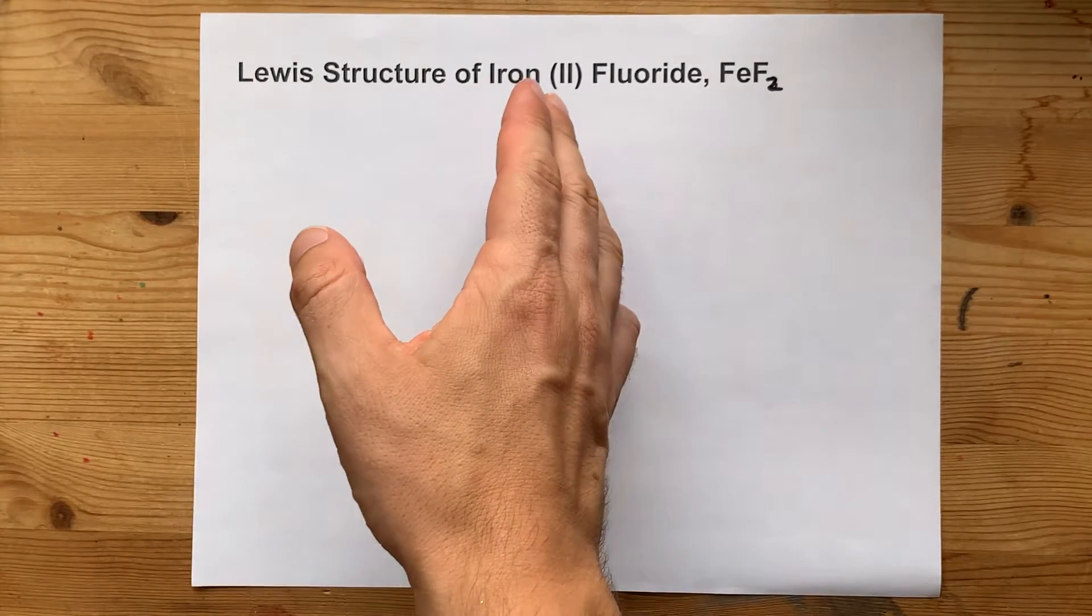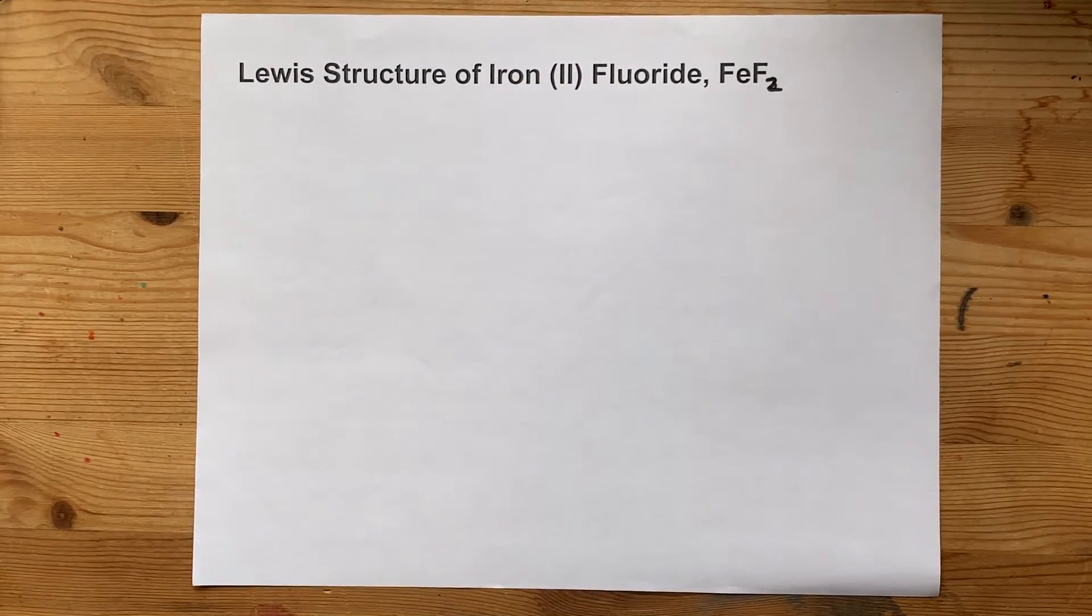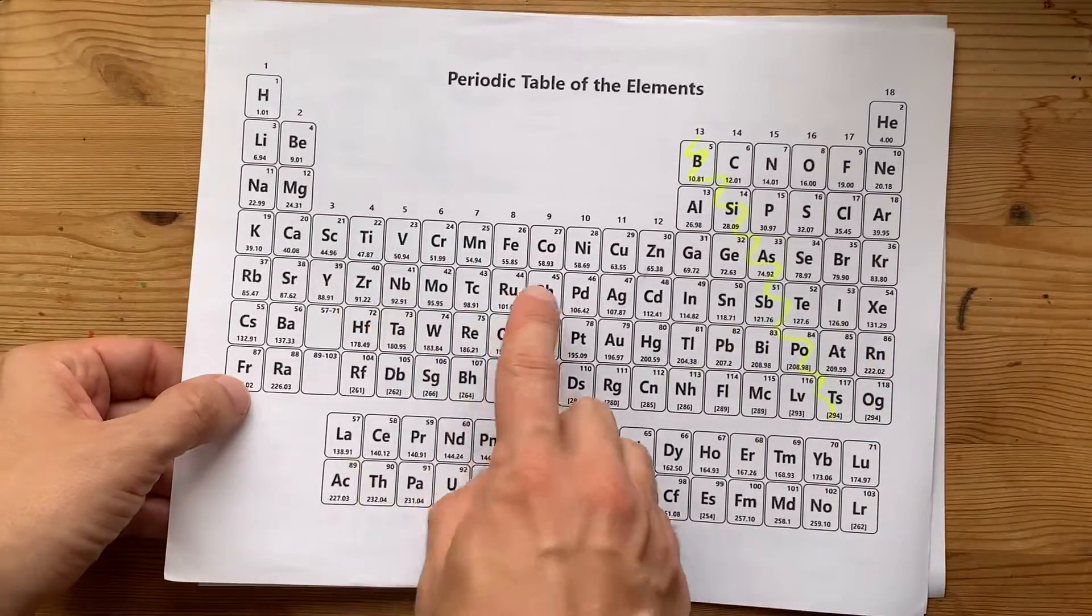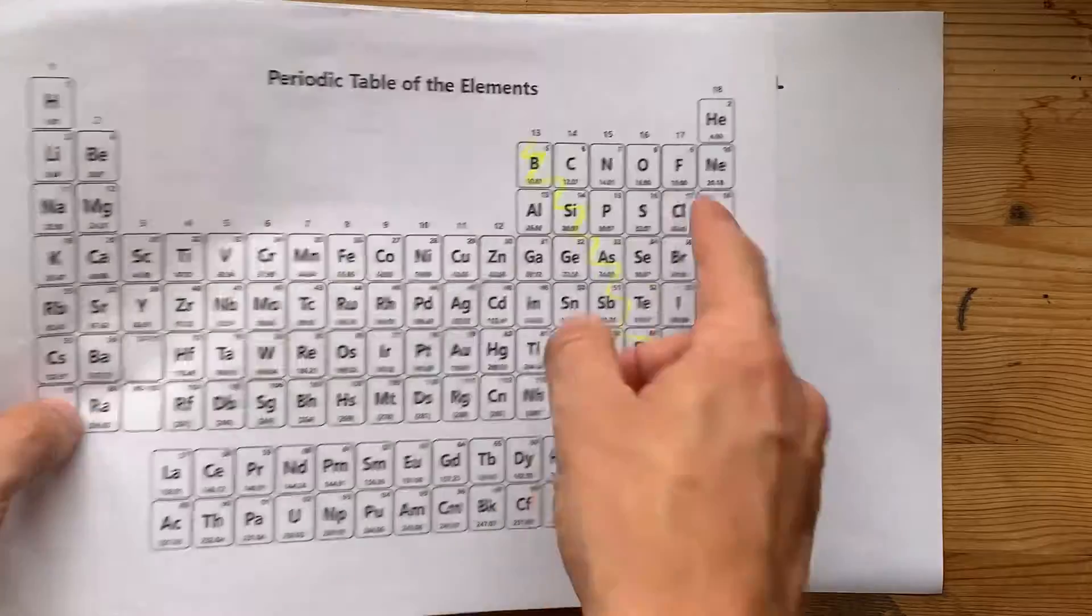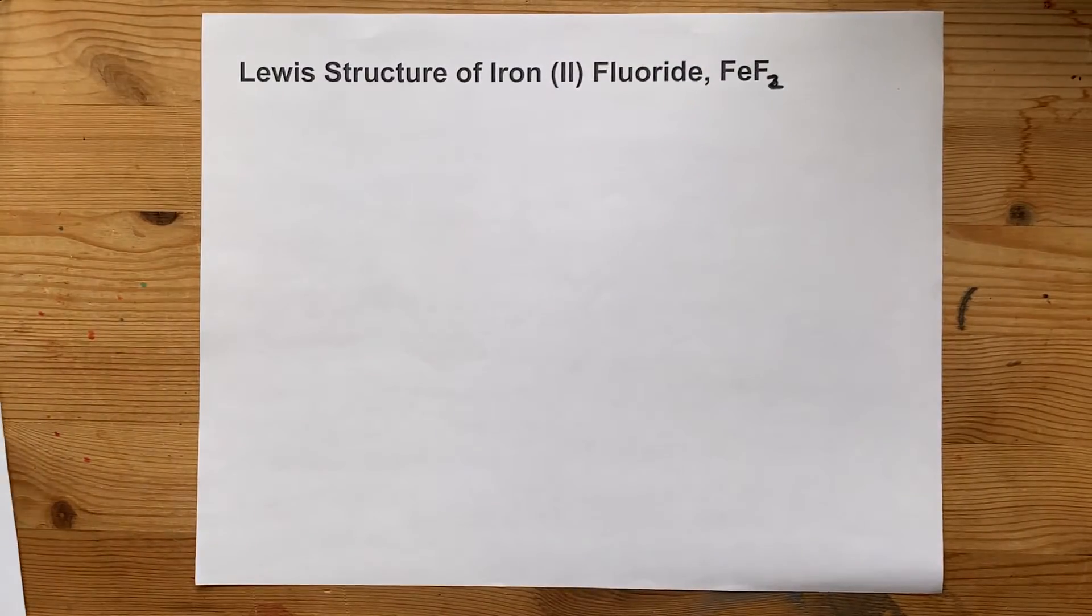The Lewis structure of iron to fluoride, or FeF2, has a metal, iron, bonding to a non-metal, fluorine, which means it's an ionic compound.